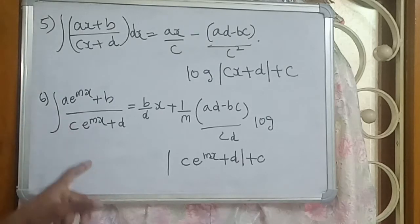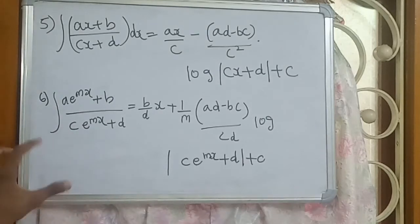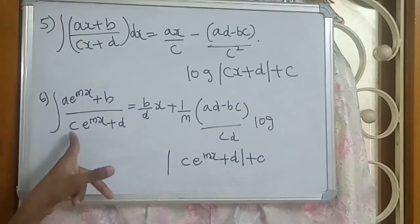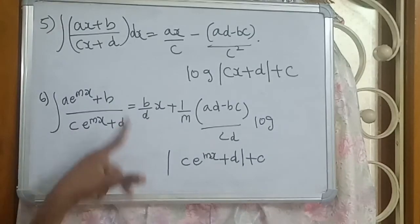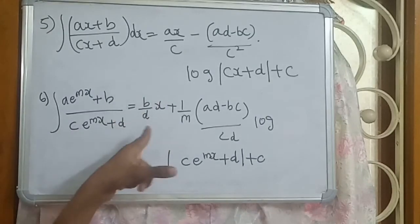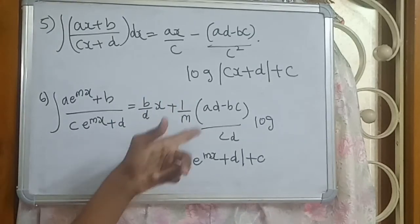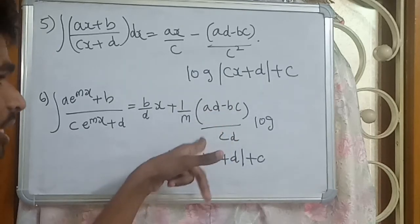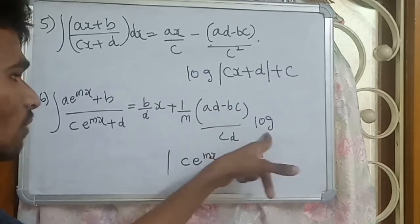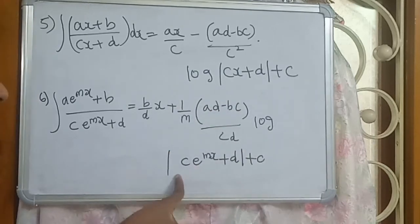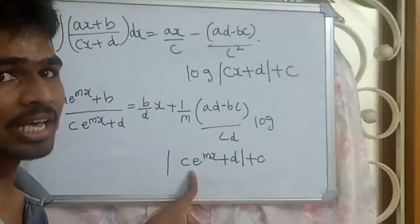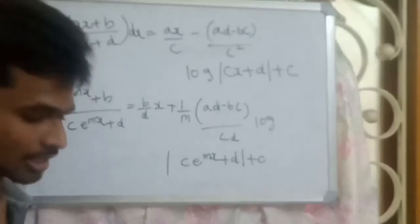Sixth formula: integration of a times e to the power mx plus b by c times e to the power mx plus d equals b by d times x plus 1 by m times (ad minus bc) by cd times log of c times e to the power mx plus d, plus C.